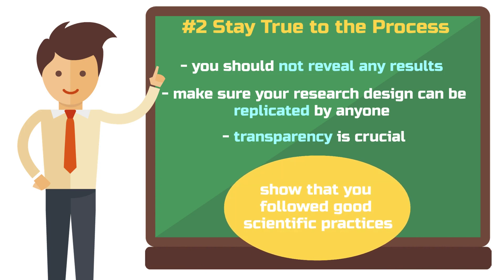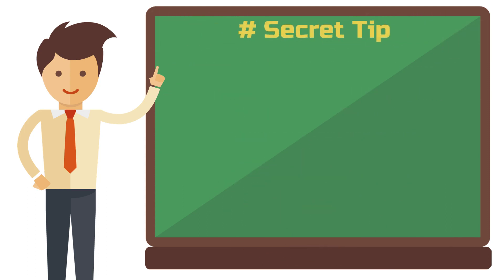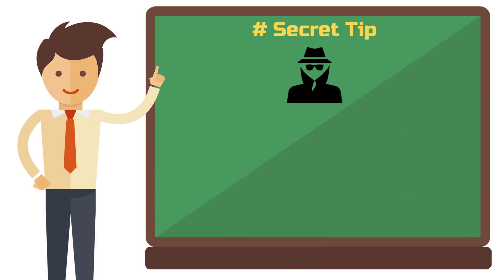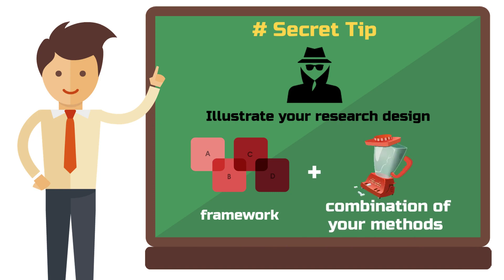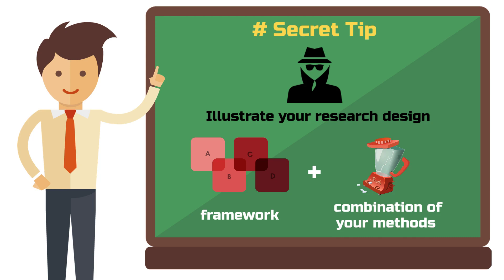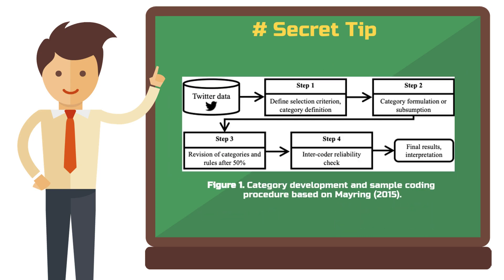Before we dive into the third and final fundamental principle, here is a secret tip: illustrating your research design. This means visually representing your research design in a way that is both clear and engaging. Build on the framework you reference at the beginning, but apply it specifically to the combination of methods you have chosen. For example, in one study a qualitative content analysis of Twitter postings was conducted. The individual steps one to four are then described in chronological order in the text — the figure makes it more appealing and allows the reader to see the whole process at a glance.